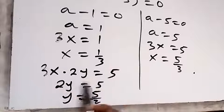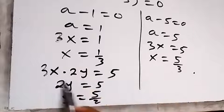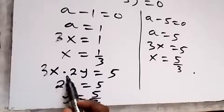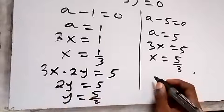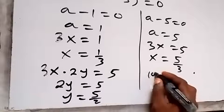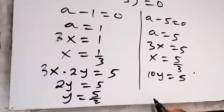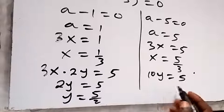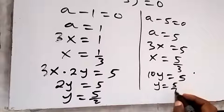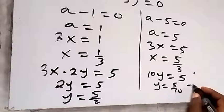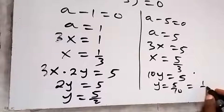For x equals 5/3: substituting into 3x times 2y equals 5 — the 3 cancels — giving 5 times 2y equals 10y, so 10y equals 5. Dividing both sides by 10, y equals 1 over 2.